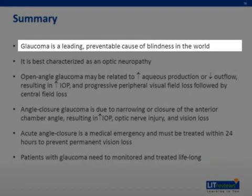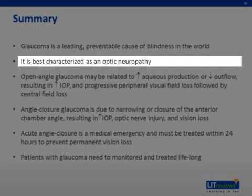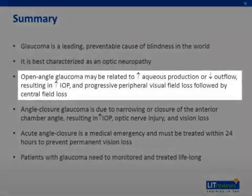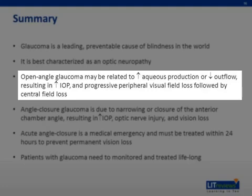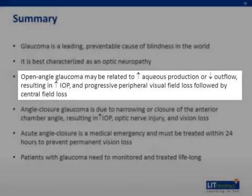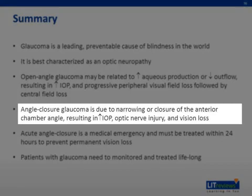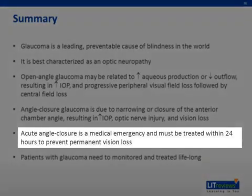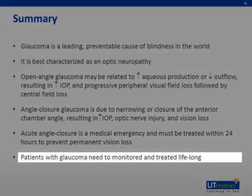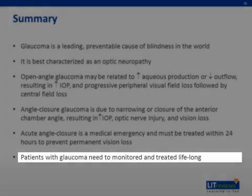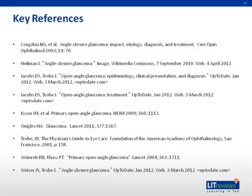In summary, glaucoma is a leading cause of preventable blindness in the world, characterized as an optic neuropathy. Open angle glaucoma may be related to increased aqueous production or decreased outflow, resulting in increased intraocular pressure and progressive peripheral visual field loss, followed by central field loss. Angle closure glaucoma is due to narrowing or closure of the anterior chamber angle, resulting in intraocular pressure elevation, optic nerve injury, and vision loss. Acute angle closure glaucoma is a medical emergency and must be treated within 24 hours to prevent permanent vision loss. Patients with glaucoma need to be monitored and treated lifelong.